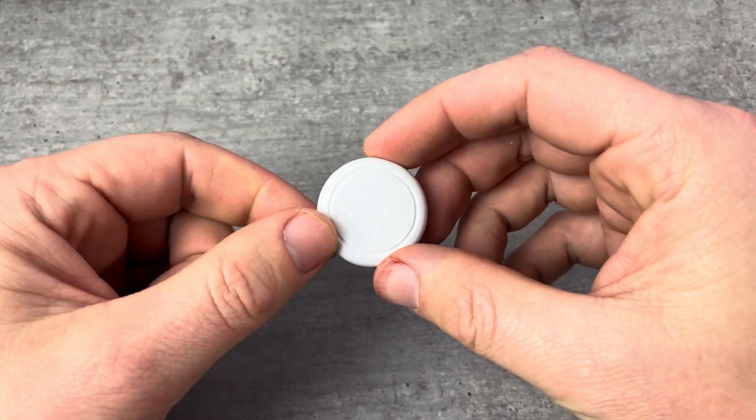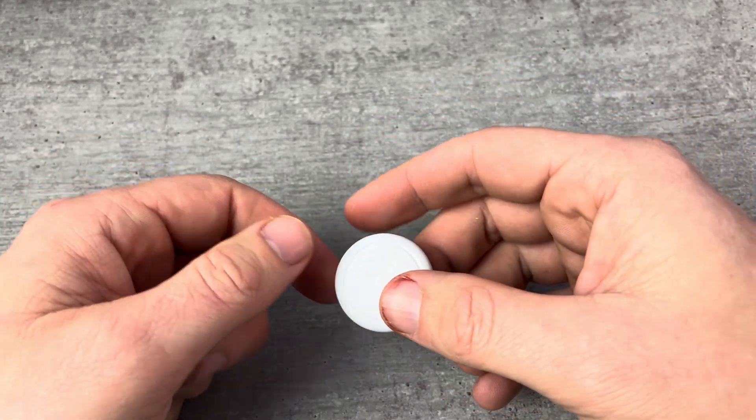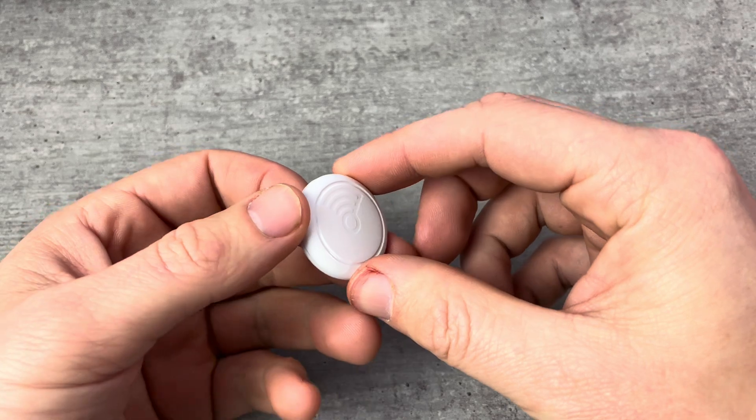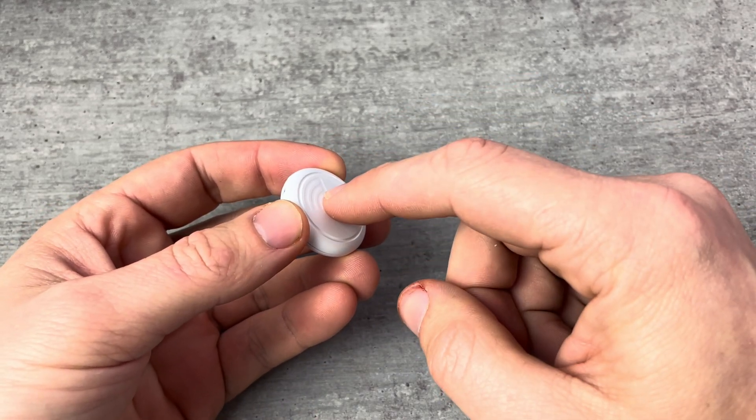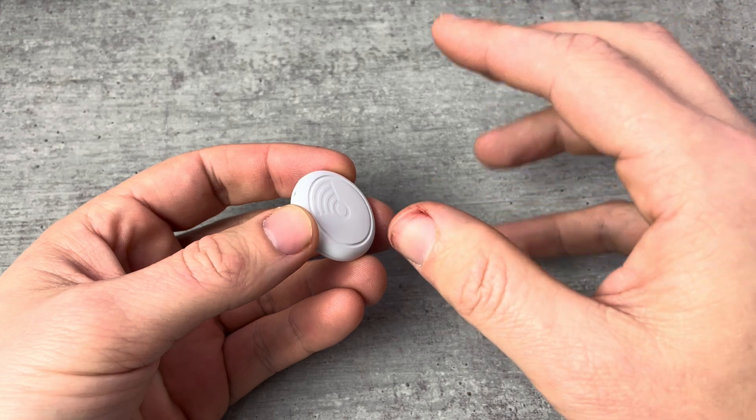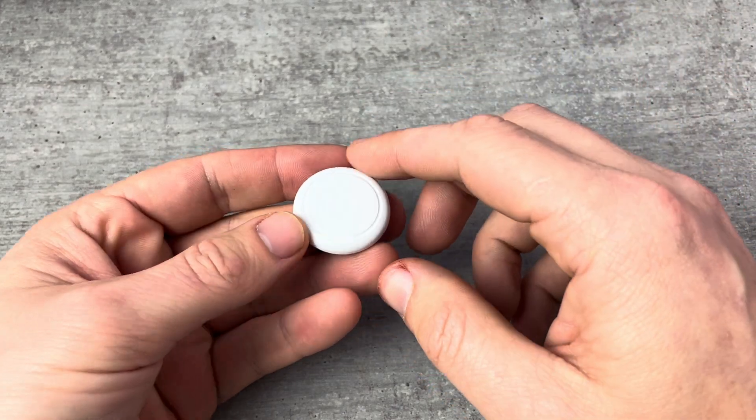Now, because it's going to be brand new, we're also going to want to delete it off of the Find My app so we can pair it as brand new. And the way we're going to do this is we're going to do four taps on this button and then a long hold for five seconds. We're going to get the same sound as when we turn it on, so we're going to need to make sure it's turned on when we do this.